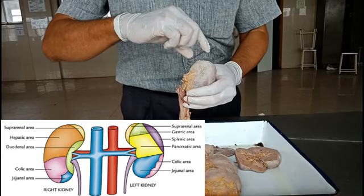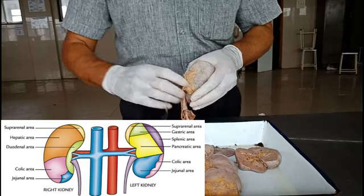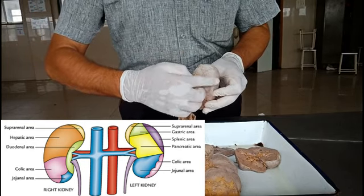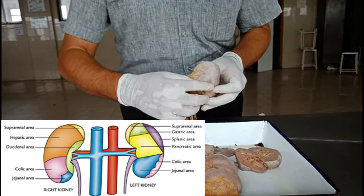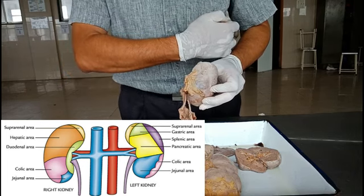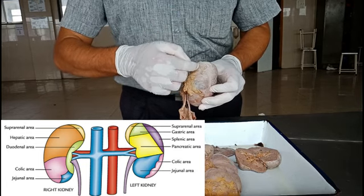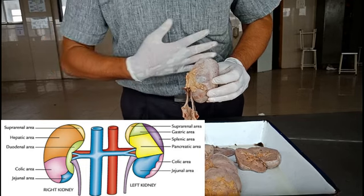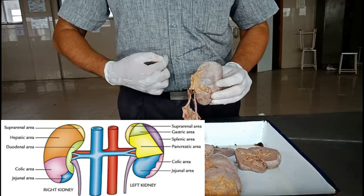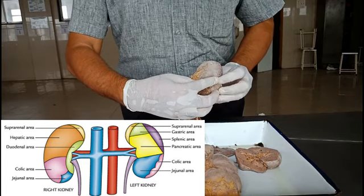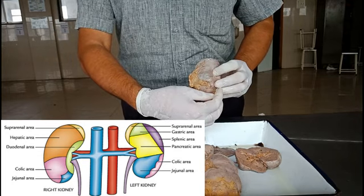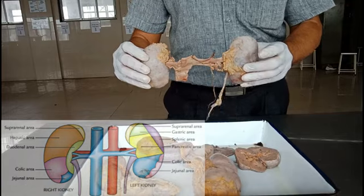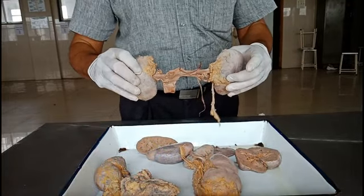For the left side: the suprarenal gland is at the upper part, the spleen is lateral, the fundus of the stomach lies between the suprarenal and pancreas, and the pancreas covers the maximum middle part. The duodenum — specifically the duodenojejunal flexure involving parts of the duodenum — occupies a large portion, and the lower part is related to the left colic flexure. In this way you can describe the anterior relations of both kidneys.